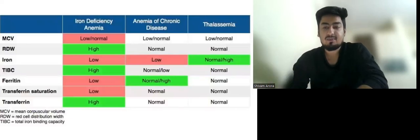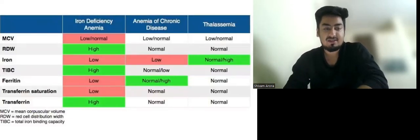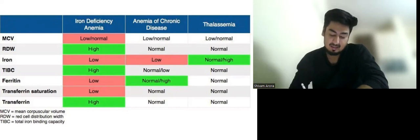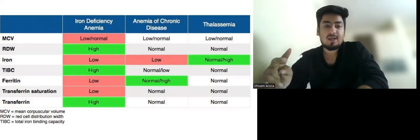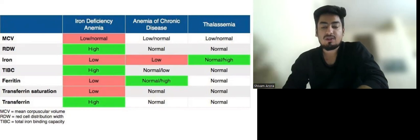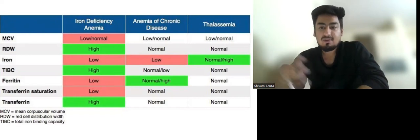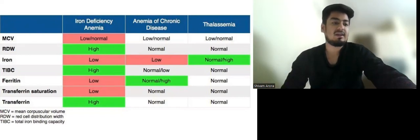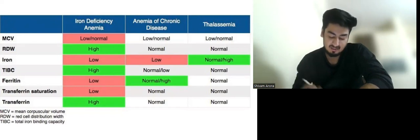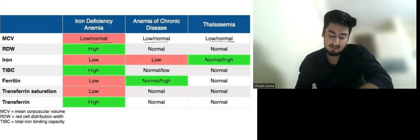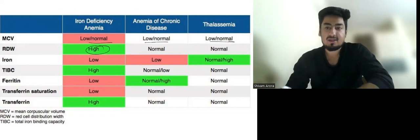Now let us discuss this important table on how to differentiate between iron deficiency anemia, anemia of chronic disease, and thalassemia, because all three are causes of microcytic anemia — although anemia of chronic disease can be microcytic or normocytic. The iron profile is the basis for differentiation. MCV is low in all three; RDW is high in iron deficiency anemia but normal in the others.